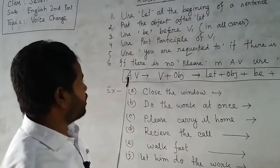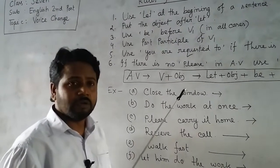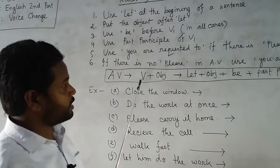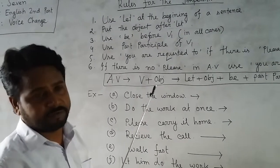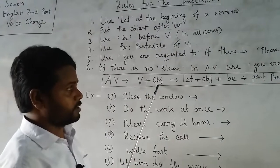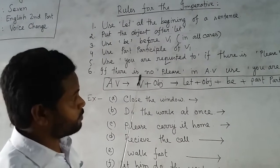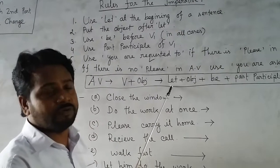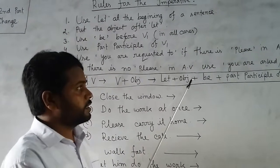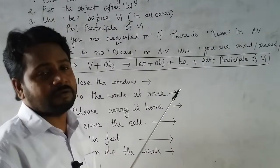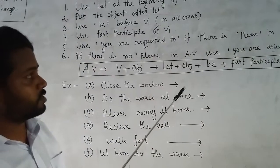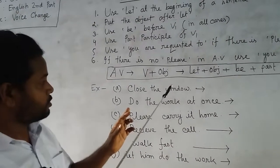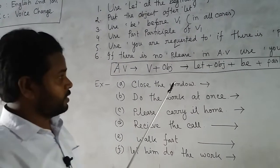My dear students, the active voice has an imperative sentence, and you know the characteristic of the imperative sentence — generally, an imperative sentence starts with a verb: verb plus object. So the structure of passive voice for imperative sentence is: at first use 'let', then the object, then 'be', and last the past participle of the main verb. We will follow these rules to convert active voice into passive voice.